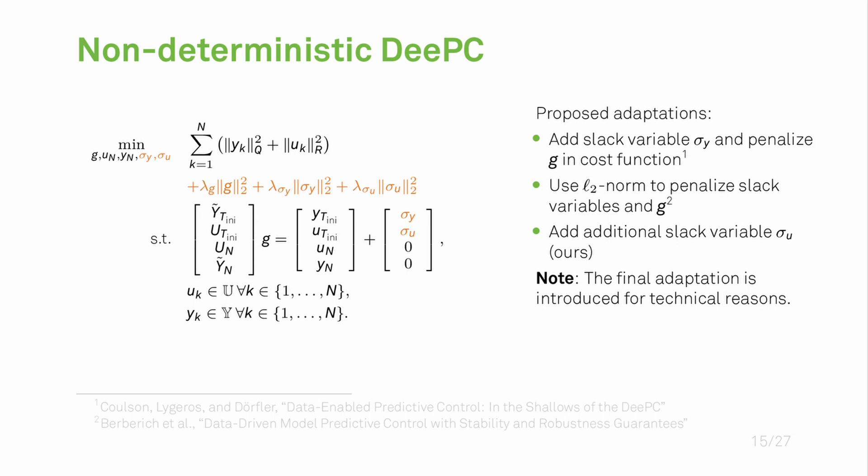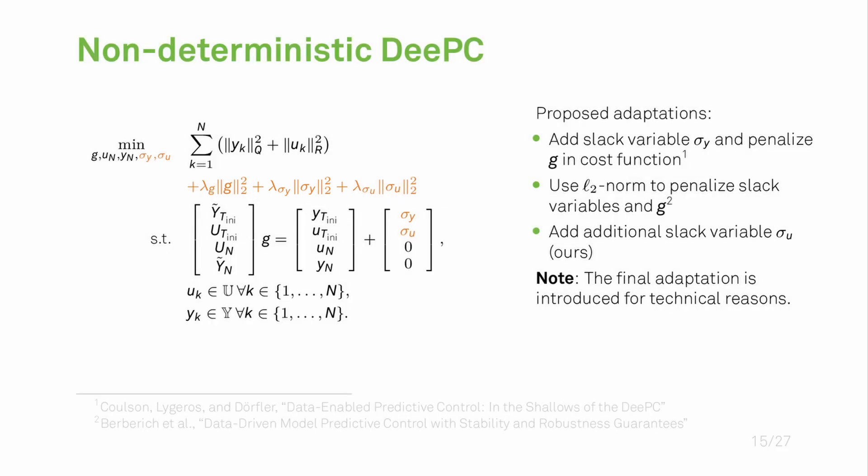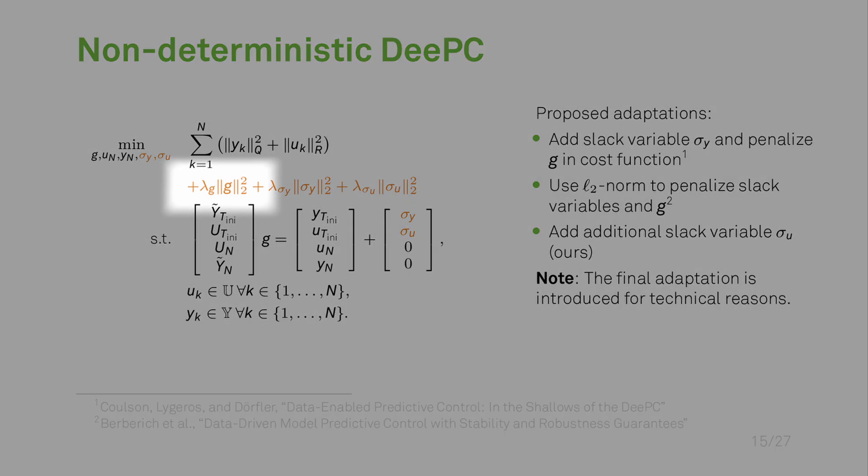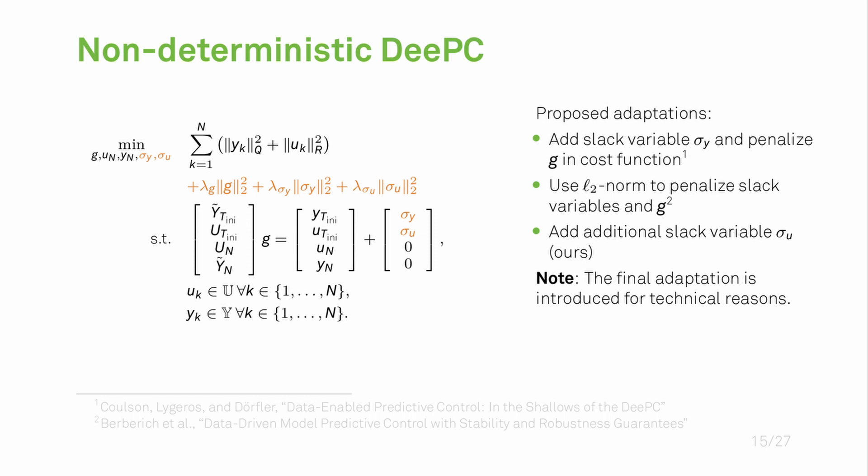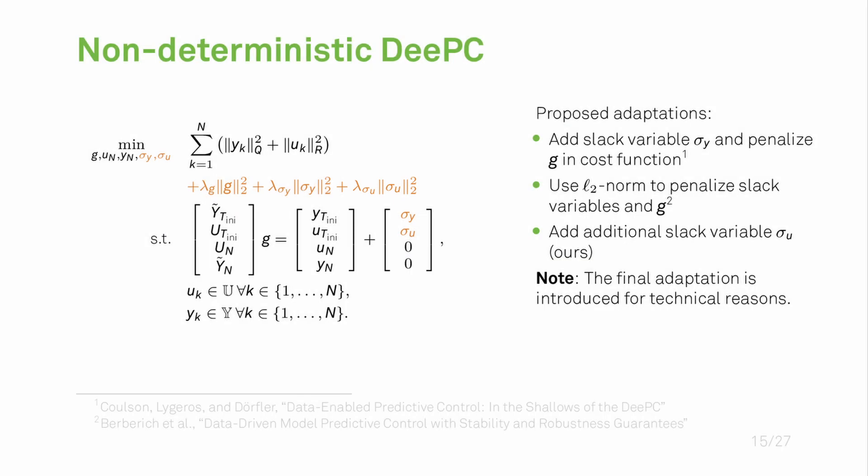For the non-deterministic formulation, changes were proposed already in the original work on DeePC and we are presenting here a slightly adapted formulation. The changes with respect to the non-deterministic formulation are highlighted in orange and these are: first, the addition of a slack variable sigma_Y and penalization in the cost function, then a penalization of the optimization variable G also in the cost function. In the original work on DeePC these slack variables were penalized with the L1 norm. We penalized them here with the L2 norm which is in accordance to this work, and we also added an additional slack variable sigma_U which we need for technical reasons for the proofs.